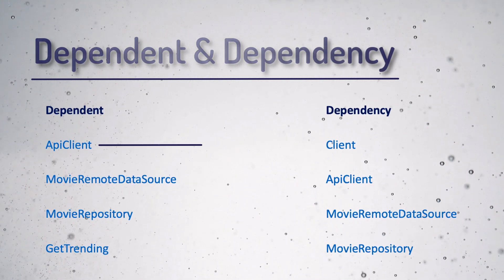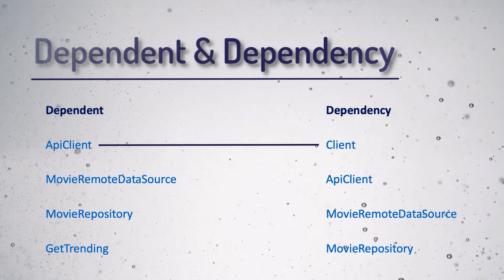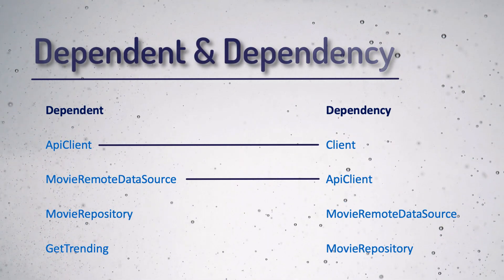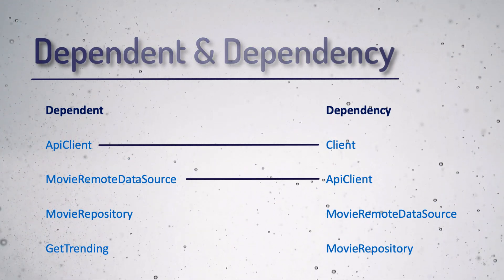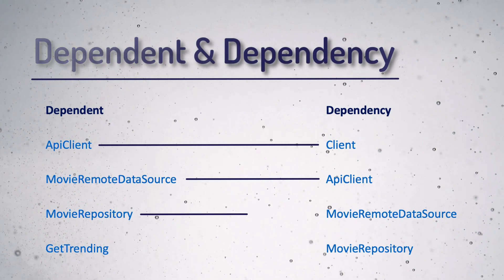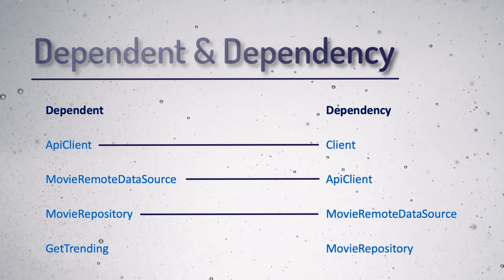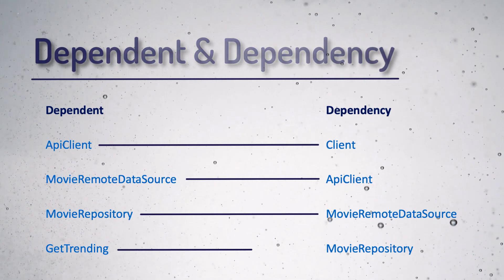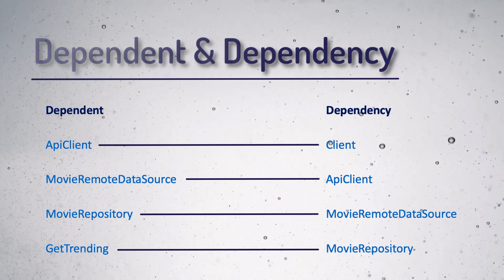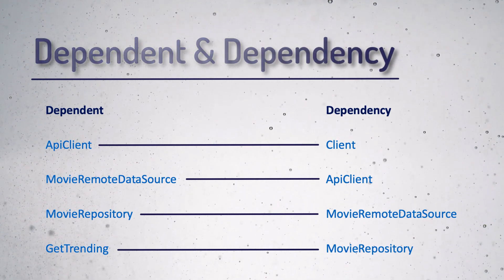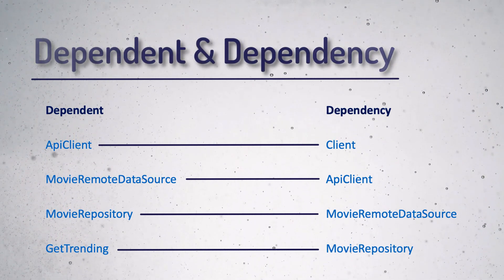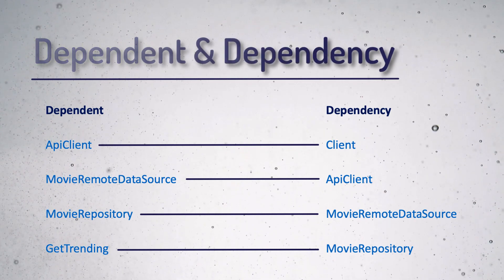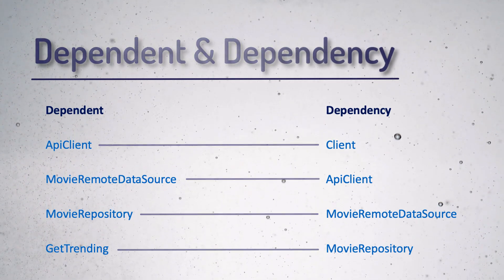Let's see what is dependency and what is dependent in our code so far. API client depends on client, MovieRemoteDataSource depends on API client, MovieRepository depends on MovieRemoteDataSource, and GetTrending depends on MovieRepository. For every use case call, you will have to instantiate all its dependencies like this.